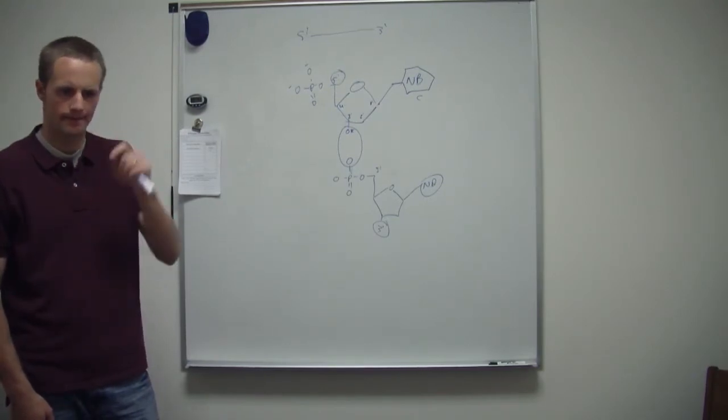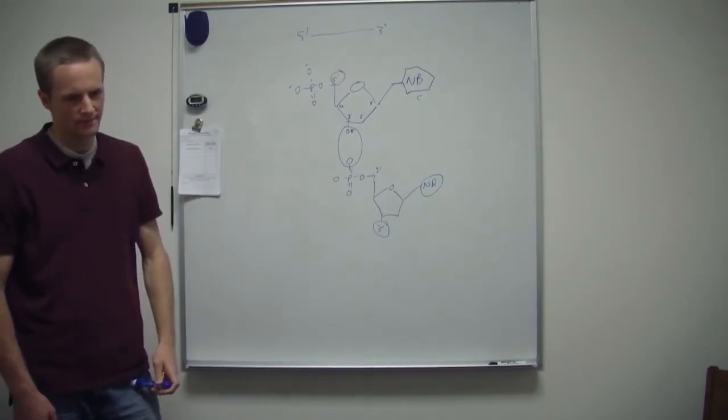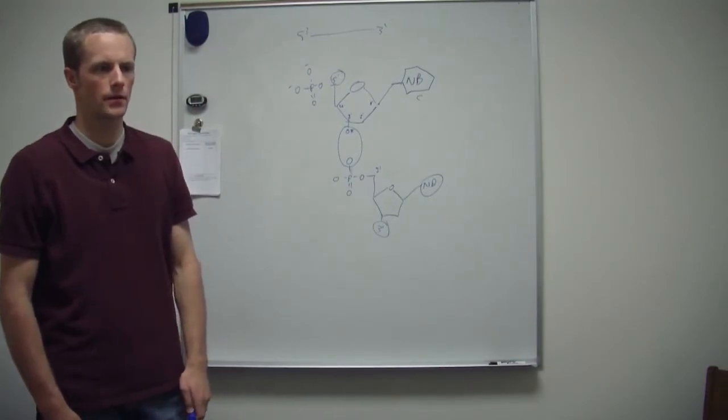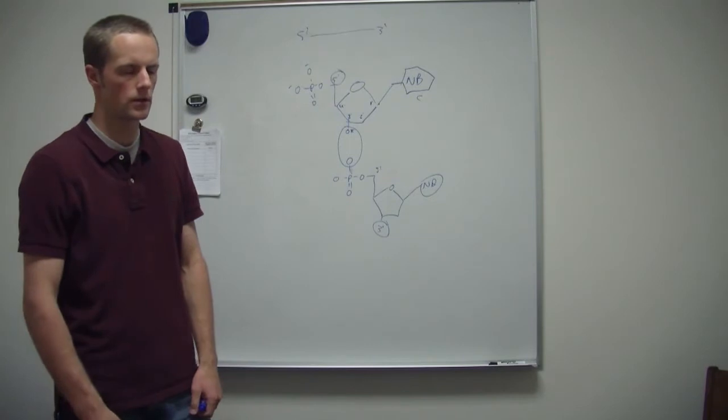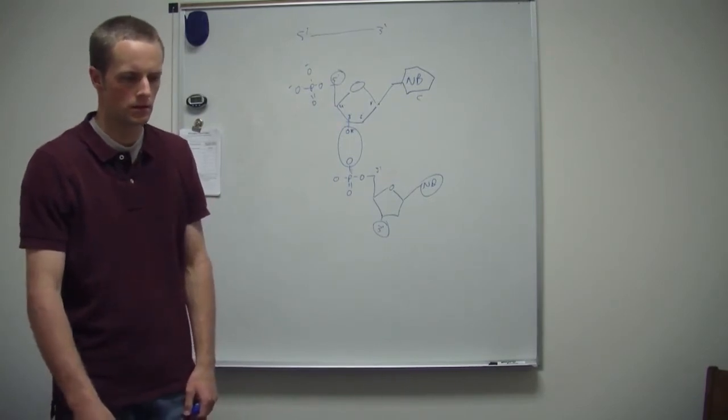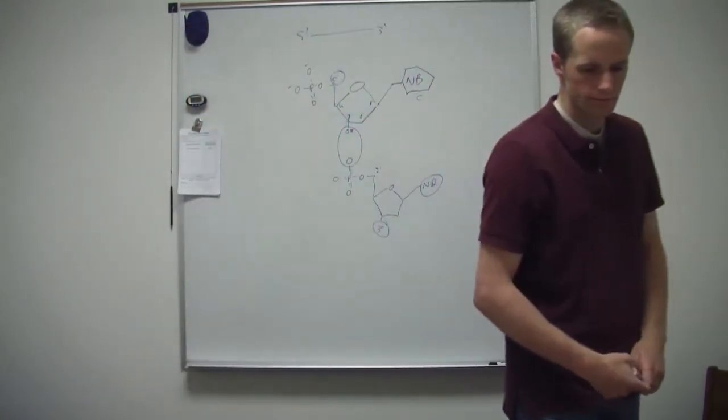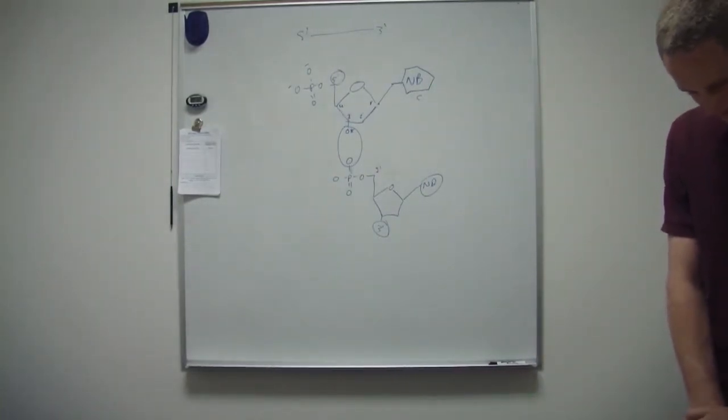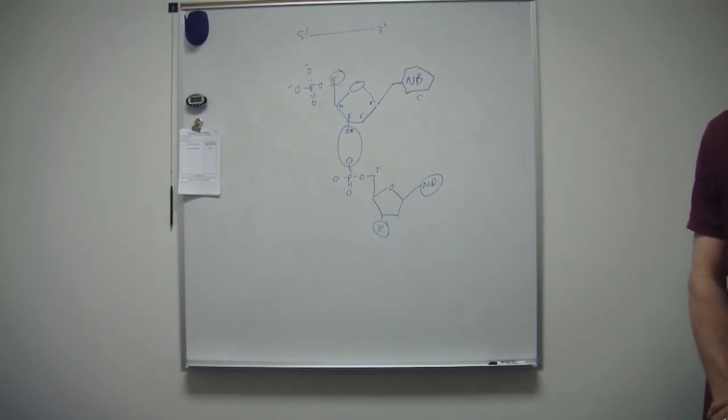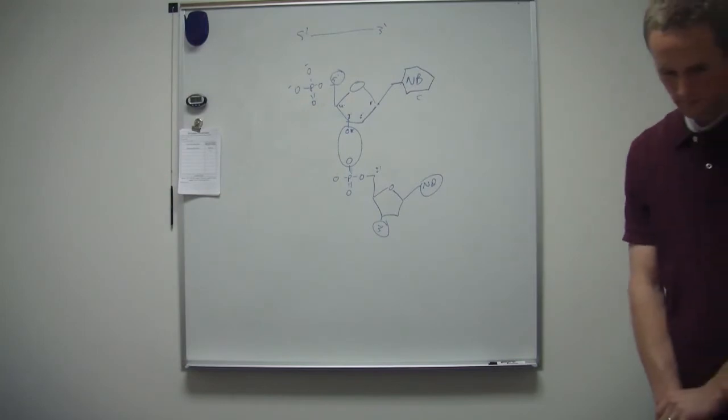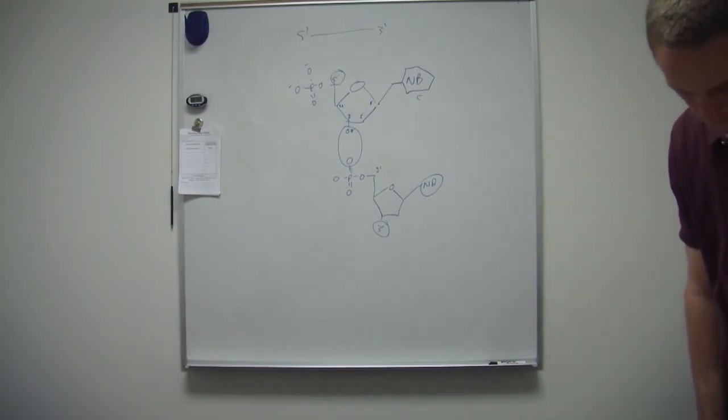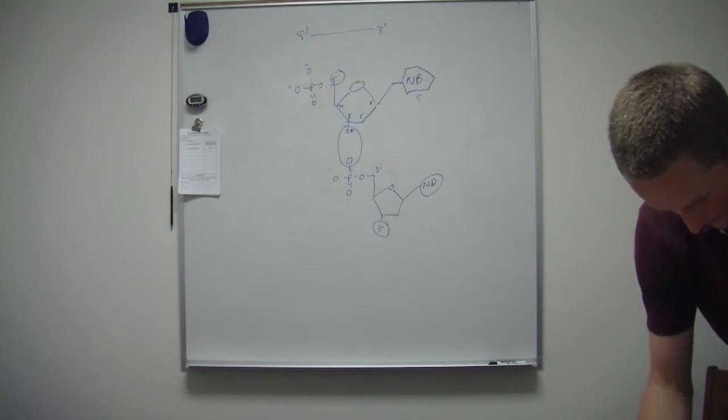And then with this question here about asymmetric carbons - basically an asymmetric carbon has to have four different groups bonded. In lecture seven, question number two, there's zero, right? Because this one's not because it has two carbons, this one's not because it has two carbons, this one's not because it has two carbons, but this one is because... oh wait, no. It's two H's, so it's zero?